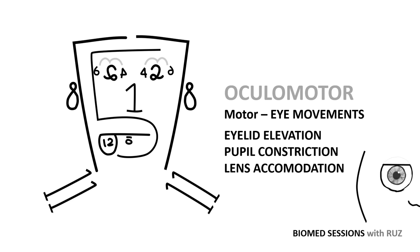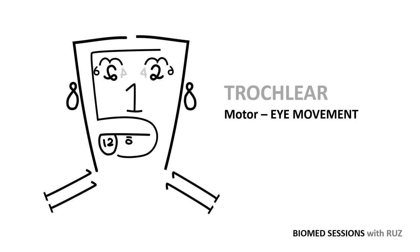Cranial nerve 4 is the trochlear nerve. As mentioned previously, it is involved in moving the eye down and out. This actually occurs through a combination of depression, abduction, and inward rotation of the eye.